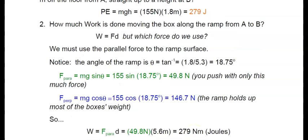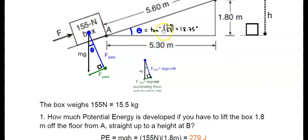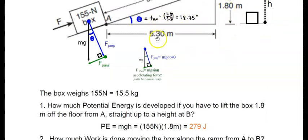The second question asks: how much work is done in moving the box along the ramp from point A to B? We know that work equals force times distance, but which force are we going to use? We must use the parallel force to the ramp's surface. We explained before that the angle of the ramp is 18.75 degrees, and that was from the arc tangent of the opposite over the adjacent.